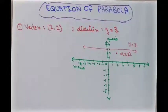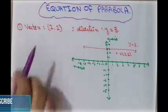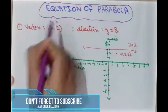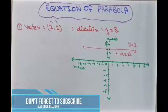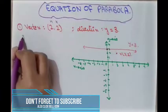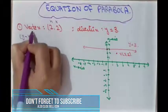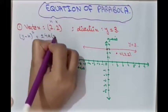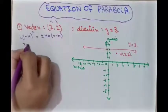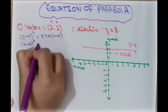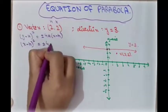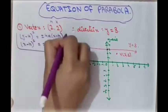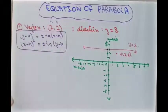Now let's check which parabola equation to use. Since the vertex is not at the origin, there are values of h and k. We use either (y − k)² = ±4a(x − h) or (x − h)² = ±4a(y − k), and we analyze our given information to determine which applies.